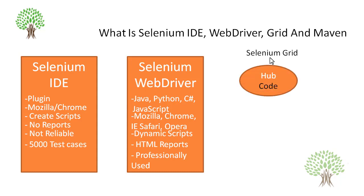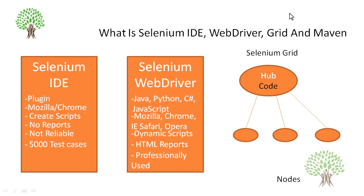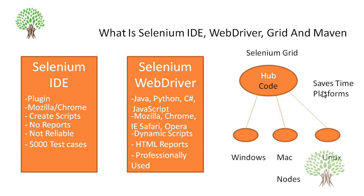In Selenium Grid we have a central machine. That central machine is known as a hub. We keep the code on the hub. The WebDriver scripts are on the hub, and we connect this hub to different other machines known as node machines. The scripts, when they execute, execute parallely on these node machines. Hence we end up saving time, plus we also have the benefit that we can run the scripts on different platforms. Our first machine can be a Windows machine, the second one can be a Mac, and the third one can be a Linux. So you can run the same script on different machines or distribute your scripts and save time.